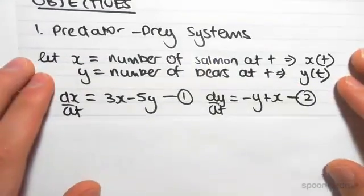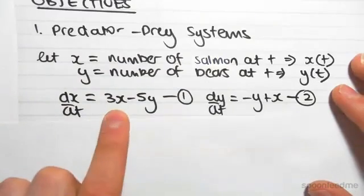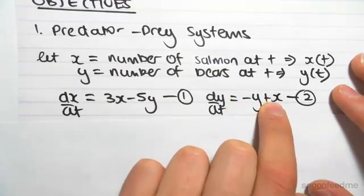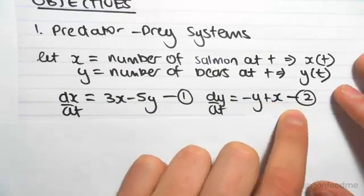And we have these equations here, dx/dt equals 3x minus 5y, and dy/dt equals minus y plus x, and that's equation number two.